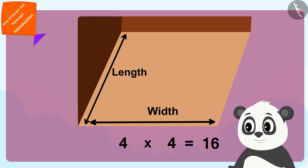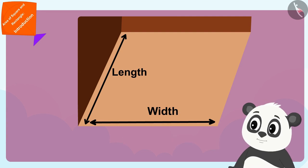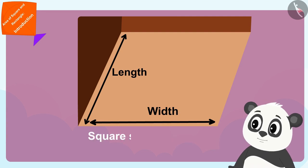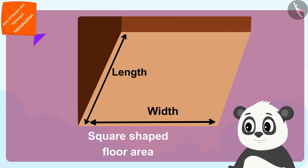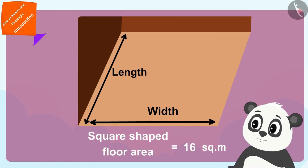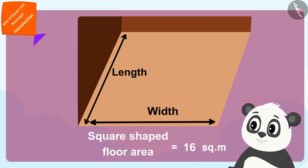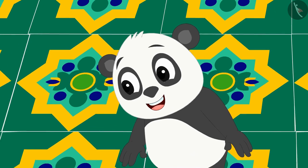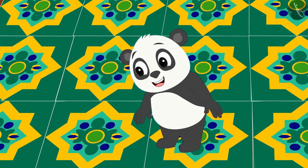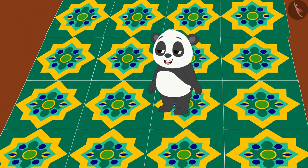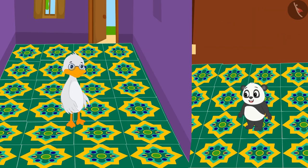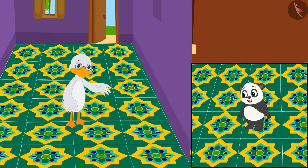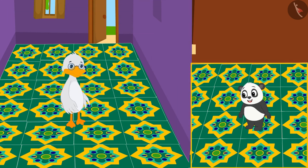In other words, Golu's square shaped floor has an area of sixteen square meters. Golu covered his floor with those beautiful tiles. See how beautiful uncle and Golu's floors look!